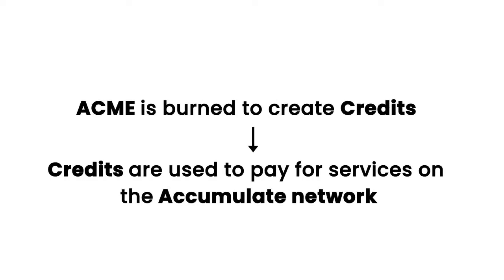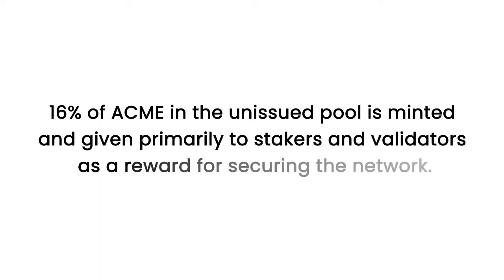Accumulate utilizes a dual token model that Factom was also the first to use in the blockchain industry. There's the native ACME coin, whose price could fluctuate depending upon market conditions, and non-tradable, non-transferable utility tokens with a fixed price called credits. ACME is burned to create credits, and credits are used to pay for services on the Accumulate network. Any ACME that is burned will return to the unissued pool to be minted in future blocks. Every year, in increments of one month, 16% of ACME in the unissued pool is minted and given primarily to stakers and validators as a reward for securing the network.